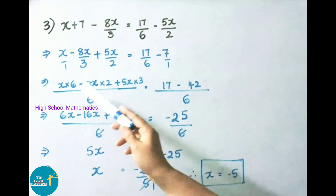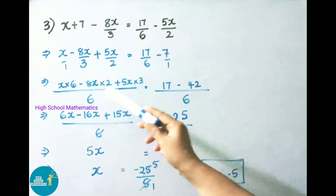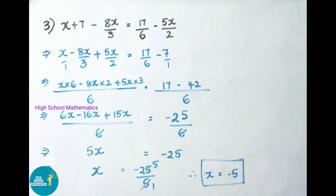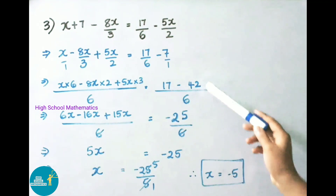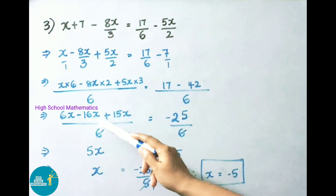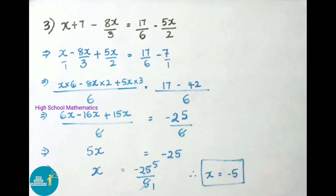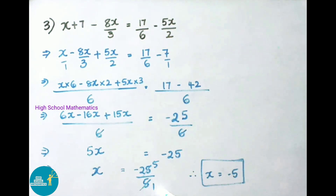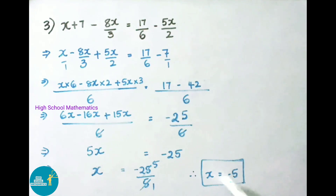That implies 6x - 16x + 15x = -25. The 6 cancels on both sides. Simplifying: 6x - 16x + 15x = 5x. So 5x = -25. Therefore x = -25/5 = -5. So x = -5.